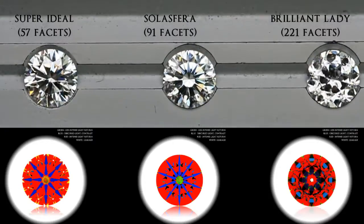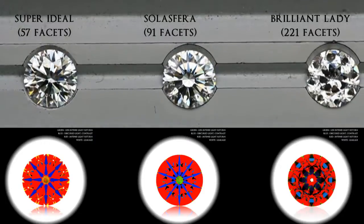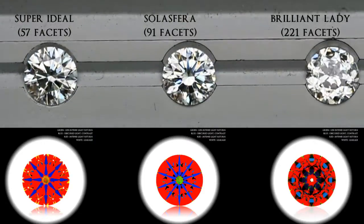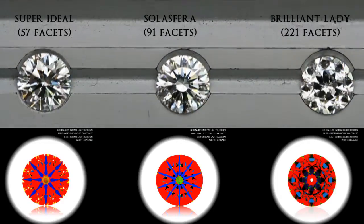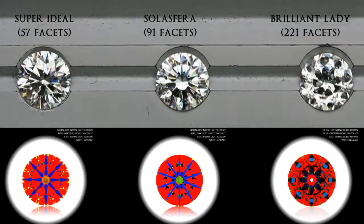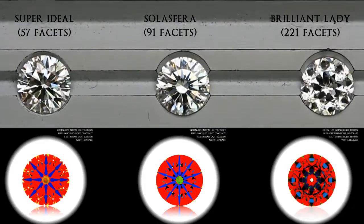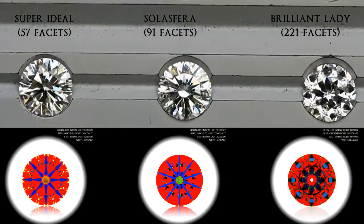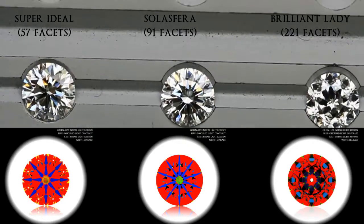Next up, we'll have a look under fluorescent light — the kind of lighting you'd find at home or in an office environment. For a lower faceted diamond, it does look better — it's more clear and sharp. Whereas for a higher faceted diamond, like the Solar Sphera or the Brilliant Lady, it can tend to look a little more heavy in contrast due to the extra facets, and it doesn't look as clear or as sharp as a lower faceted diamond like the Super Ideal.